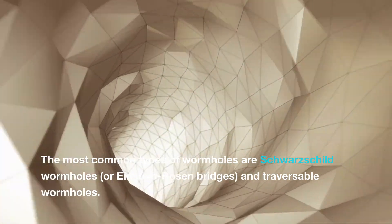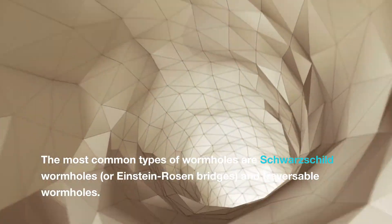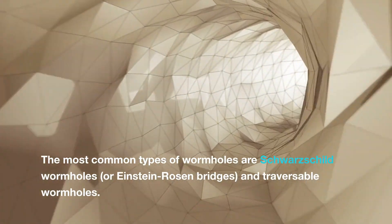The most common types of wormholes are Schwarzschild wormholes, or Einstein-Rosen bridges, and traversable wormholes. The former are not stable for passage, while the latter, a speculative concept, would require exotic matter to keep them open.